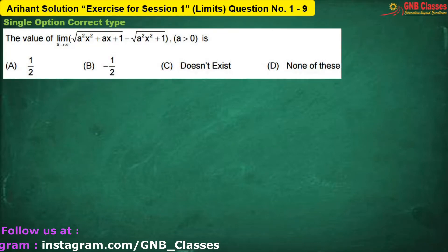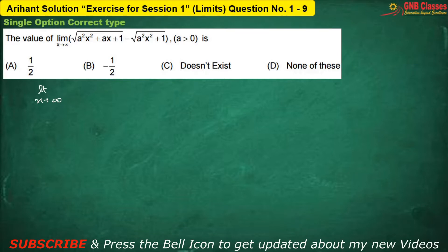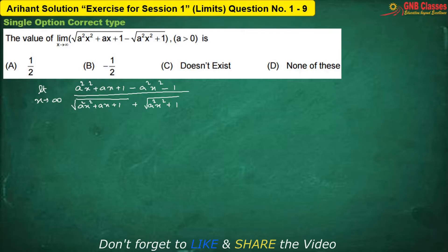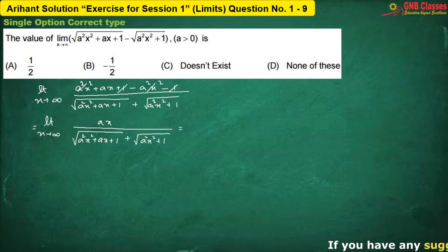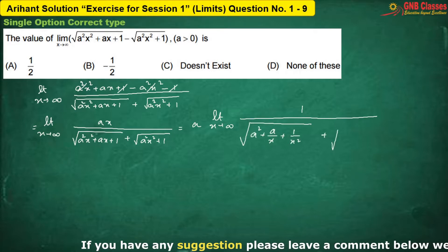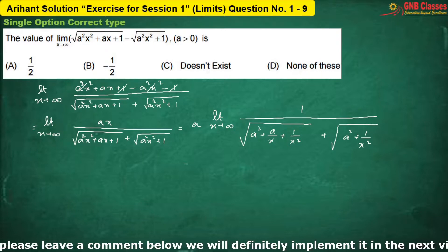In this case, we have been given limit x tends to infinity. First of all, what we are trying to do is we are simply rationalizing it. After simplification, the numerator is simplified and we can write it as a cleaner expression. As x is approaching towards infinity, we evaluate the answer.